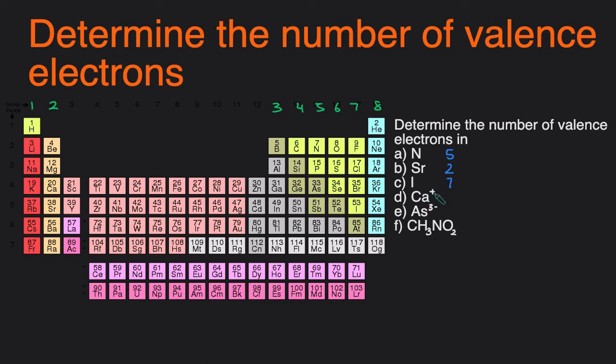When you have charges, if it's a positive charge, you subtract electrons. If it's a negative charge, you add extra electrons. So calcium normally has two valence electrons, and it has a positive one charge, so we subtract one. That means it only has one valence electron.